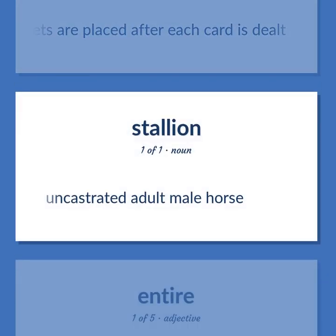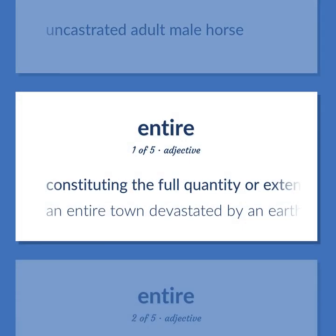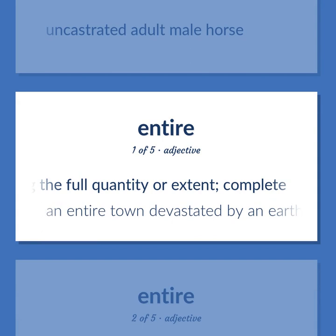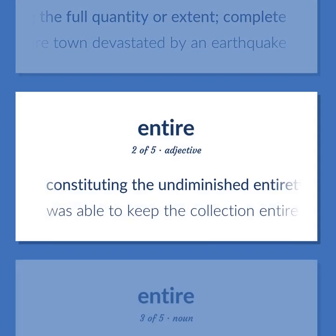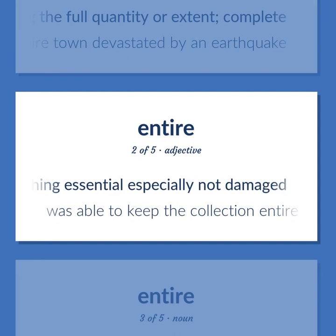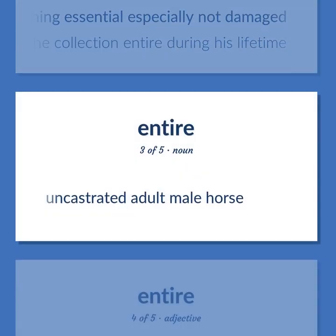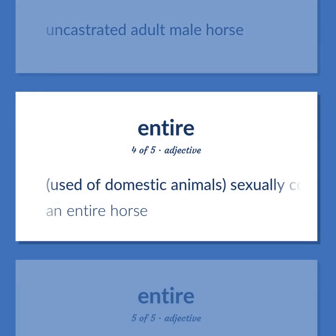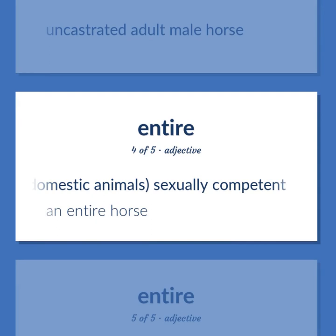Entire: Uncastrated adult male horse. Constituting the full quantity or extent; complete. An entire town devastated by an earthquake. Constituting the undiminished entirety, lacking nothing essential, especially not damage. Was able to keep the collection entire during his lifetime. Used of domestic animals, sexually competent — an entire horse.